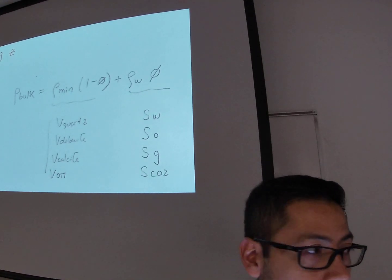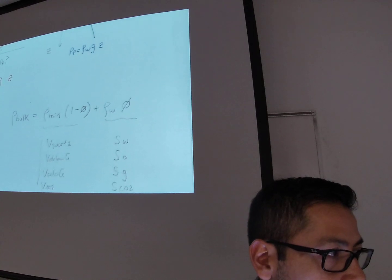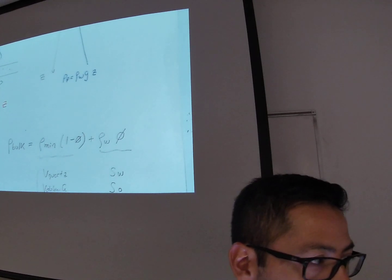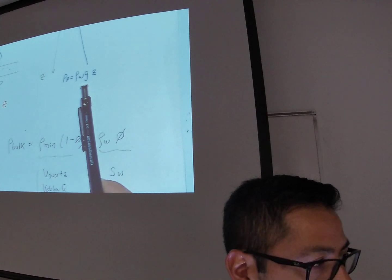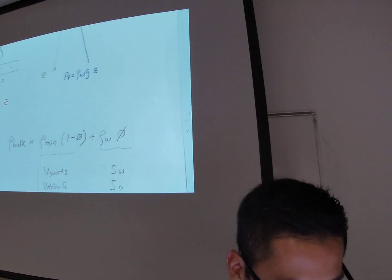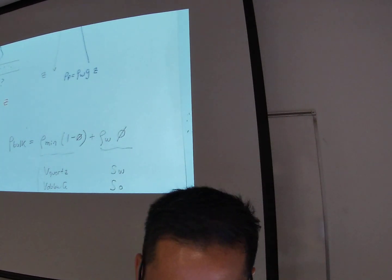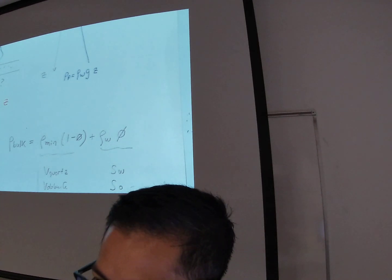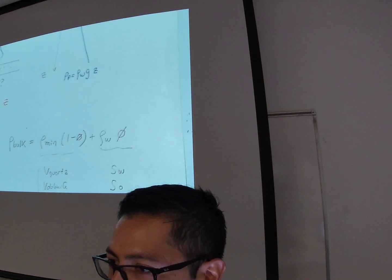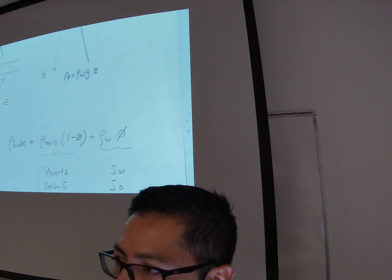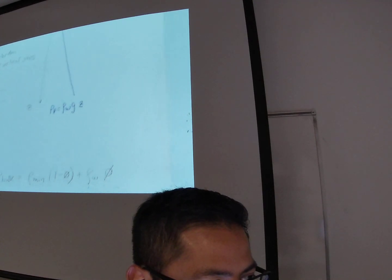Before we do numbers — which one is going to be bigger, bulk density or the density of water? The bulk density, right? Because minerals are about 2.5 to 3 times as heavy as water.